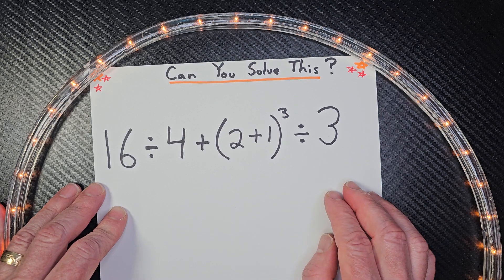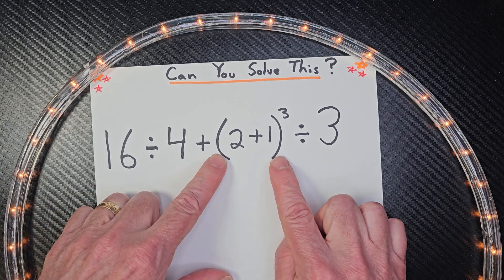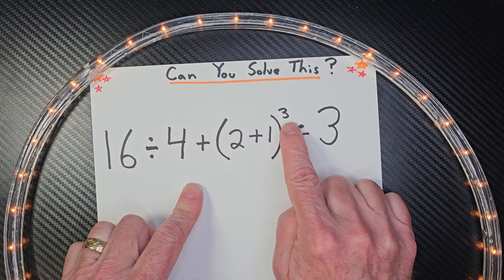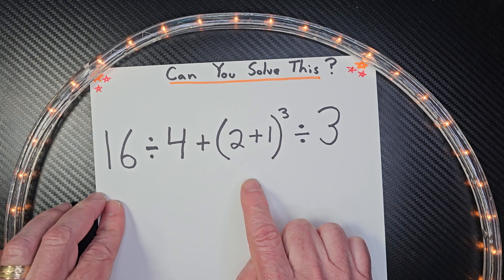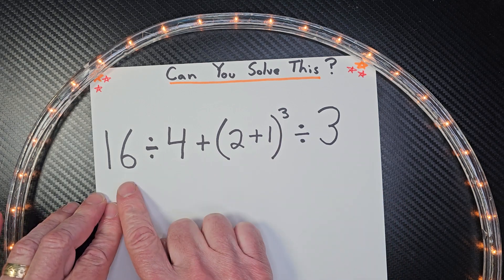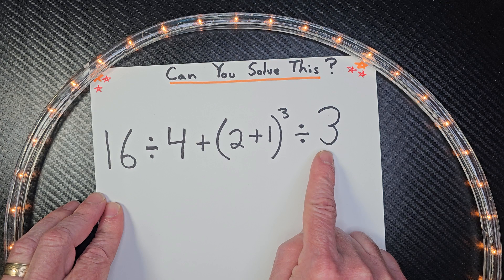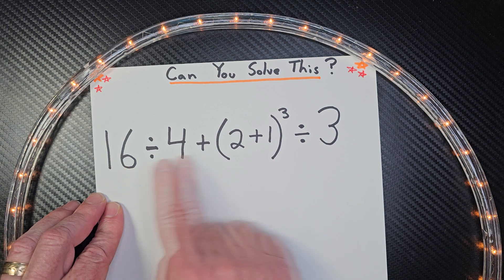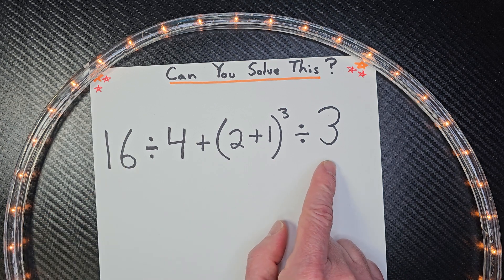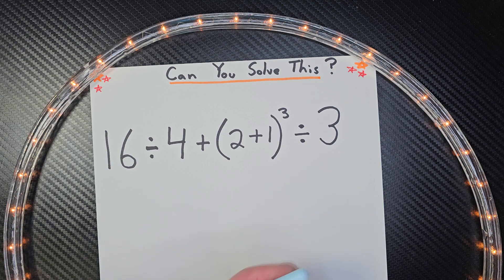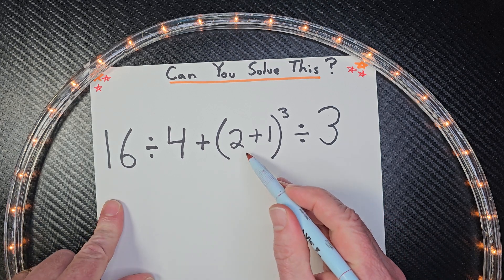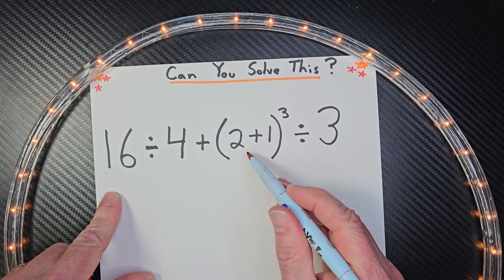Remember with order of operations: you do what's inside parentheses first. The second step is the exponents. Third step is multiplication and division from left to right. And then our last step is addition and subtraction from left to right. So let's get right into it — I have something inside the parentheses, so we need to do that first.